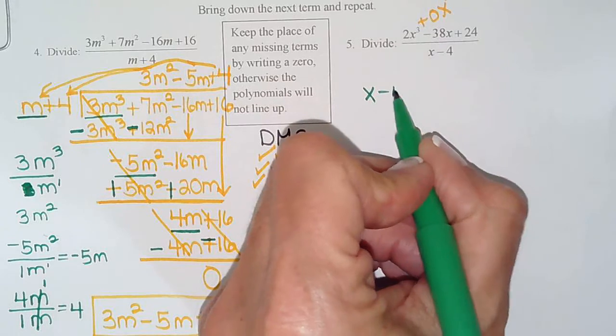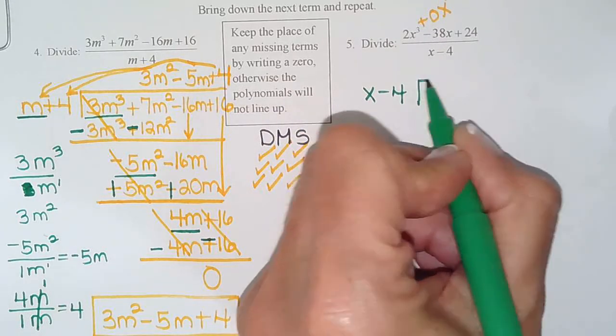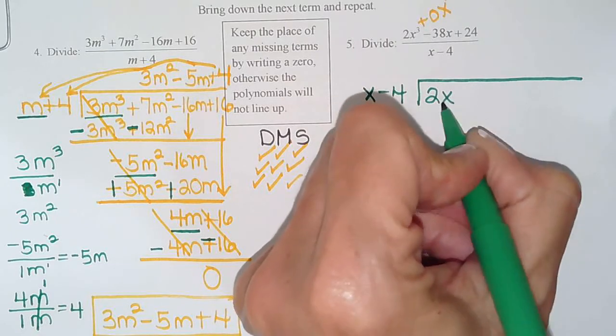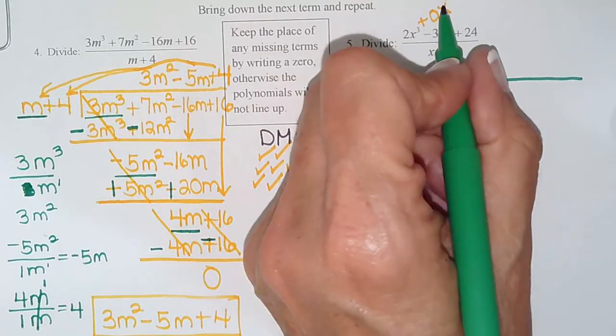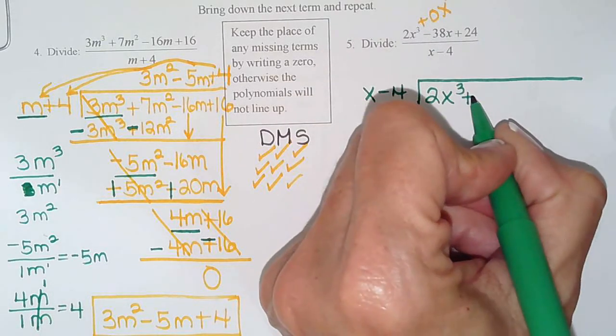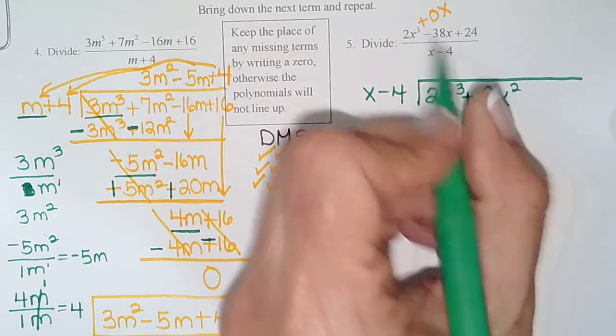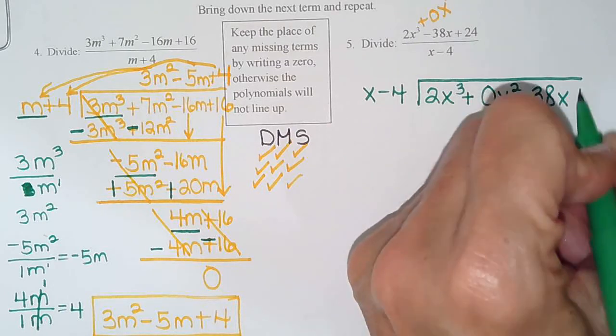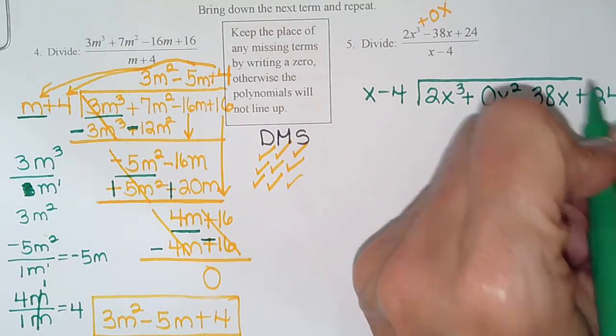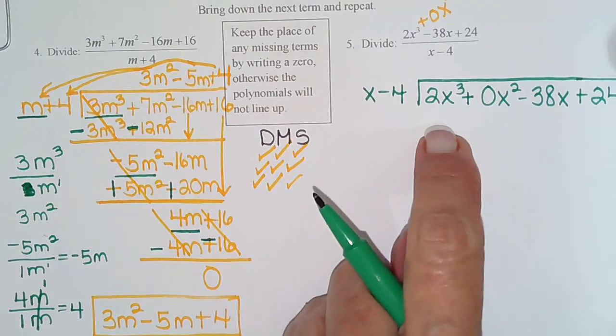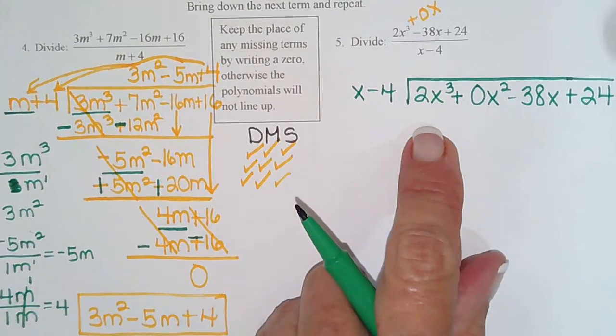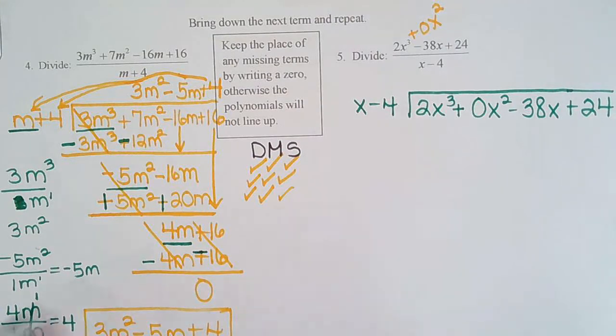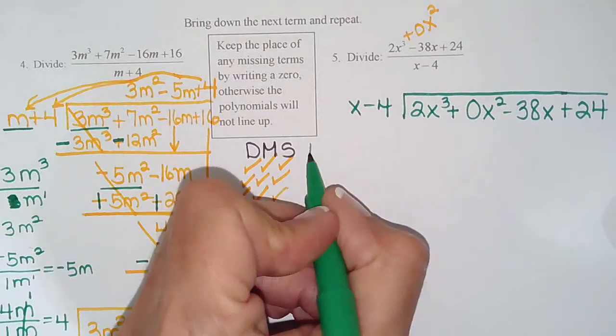Okay, so this one, the divisor is x minus 4. And the dividend is 2x cubed. There's a missing exponent too. So we write plus 0x squared minus 38x plus 24. So 2x cubed plus 0x squared minus 38x plus 24. So we're back to DMS.